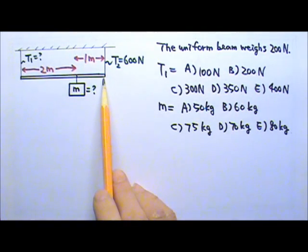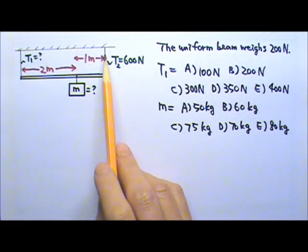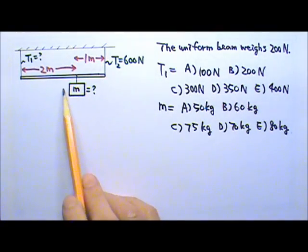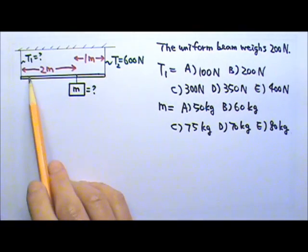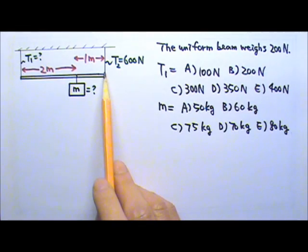This 200N uniform beam is supported by two cables, one at each end. A box of mass M hangs from the beam, 2 meters from the left end and 1 meter from the right end.